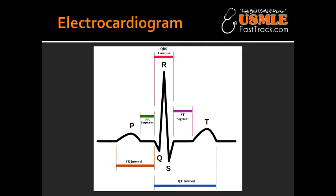List the parts of the heart by their speed of conductance from fastest to slowest. Purkinje fibers are the fastest, followed by the atria, followed by the ventricles, followed by the AV node. List the pacemakers from highest to lowest. The pacemakers are: SA node, followed by the AV node, followed by the His-Purkinje system and the ventricles. The conduction pathway goes: SA node → atria → AV node → common bundle → bundle branches → Purkinje fibers → ventricles.